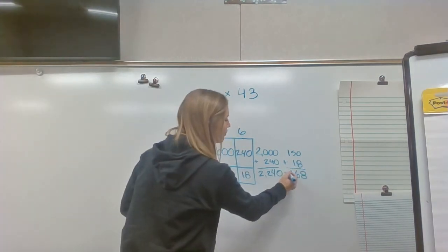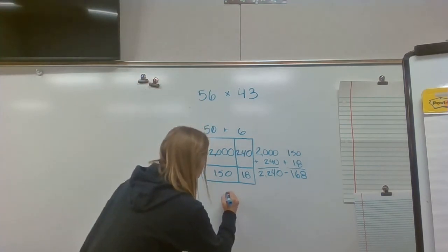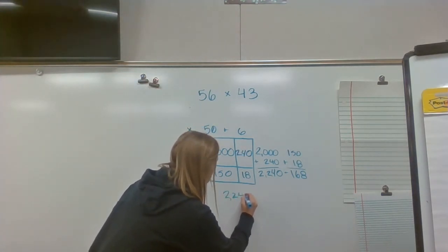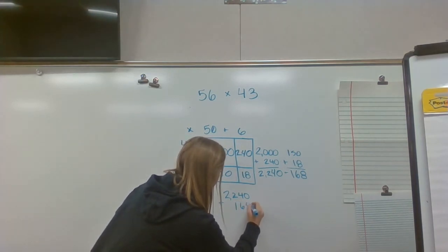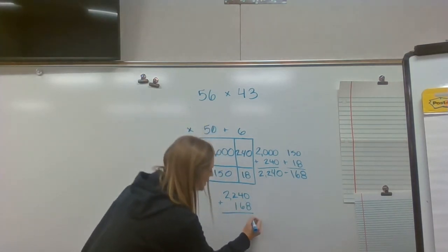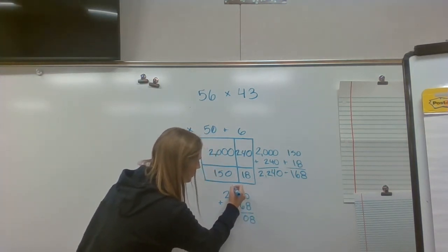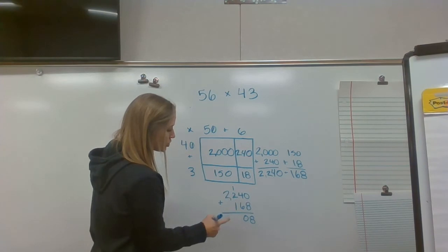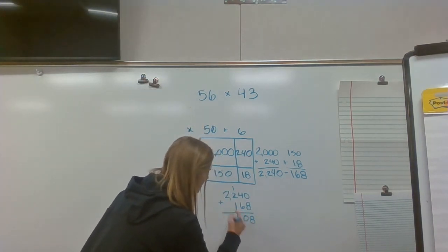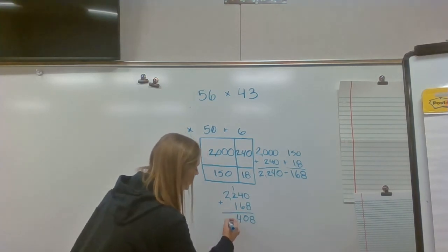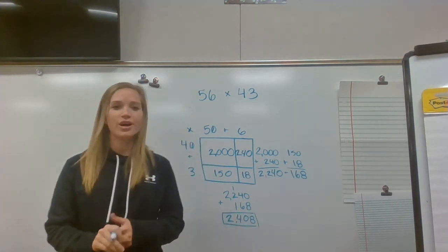Now I need to add both of those two rows together, so I'm going to do 2,240 plus 168. Zero plus eight is eight. Four plus six is 10, so I'm going to drop the zero and carry the one. One plus two is three, plus another one is four. I see a comma, so I can't forget that, and then I can drop the two down. So my answer is 2,408.